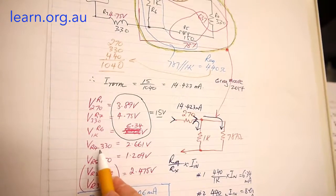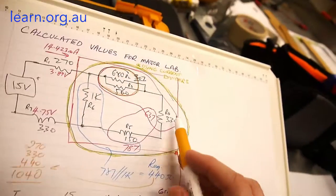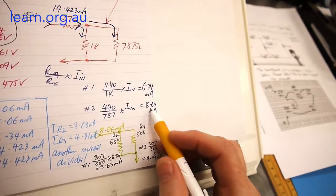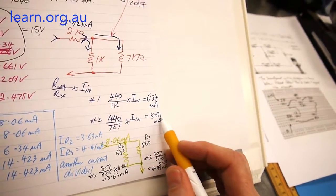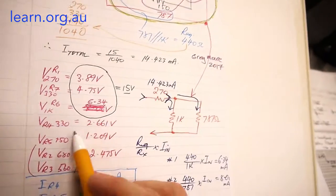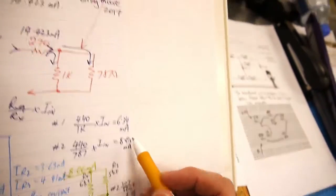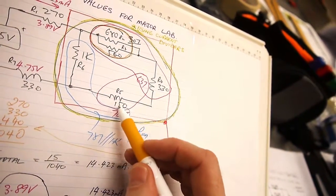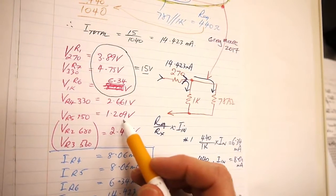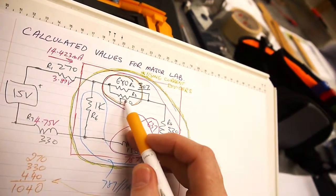Then VR4 and VR5. That branch we worked out had 8.06 milliamps traveling through it. So 8.06 milliamps times 330 ohms gives us VR4, 2.661 volts. 8.06 milliamps again traveling through R5, multiply times 150 ohms and that gives me 1.209 volts.